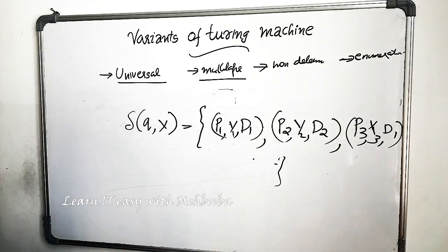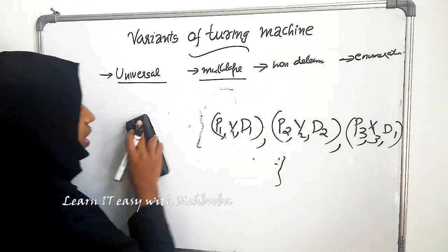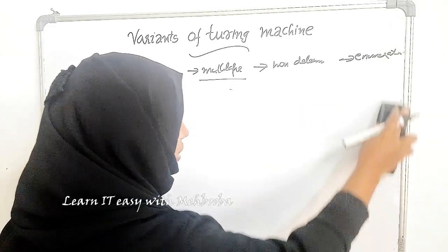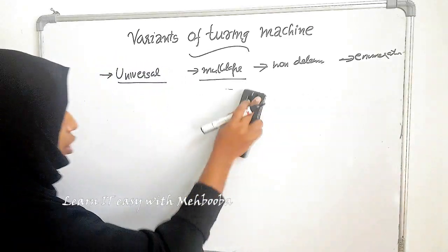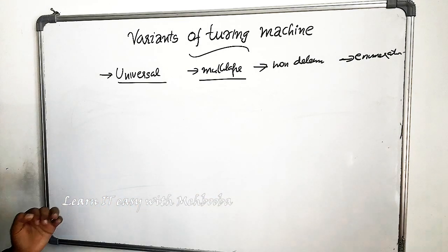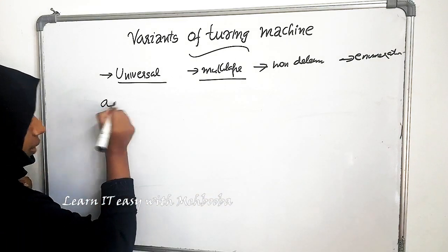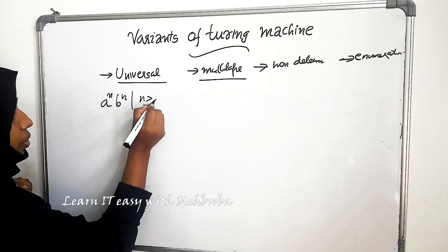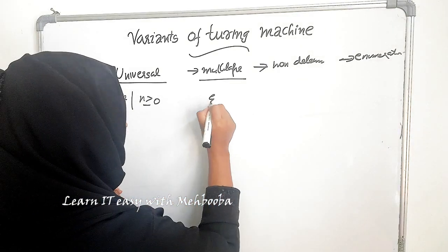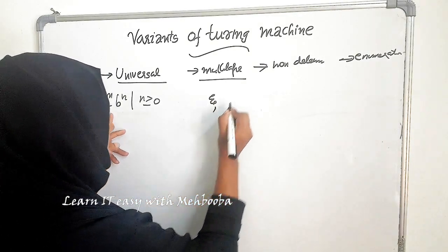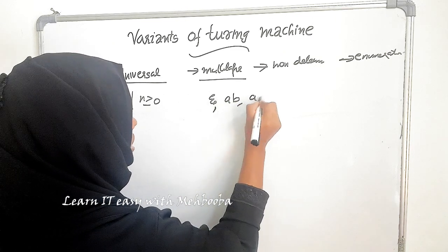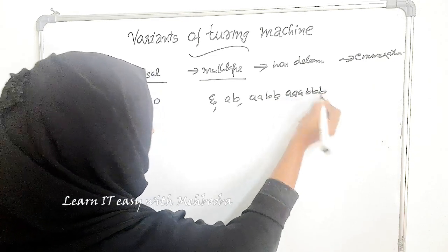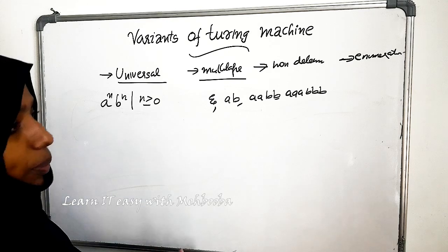The last kind of Turing machine is enumerator machines. Enumerator machines can enumerate a particular language — they generate all the strings one by one, which are getting larger progressively. For example, if the language is A^N B^N where N ≥ 0, you know that the first string is epsilon, the second string is AB, the third string is A²B², the fourth string is A³B³. All such strings will be generated one after the other by an enumerator machine.